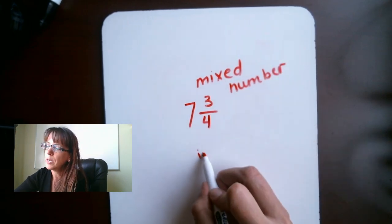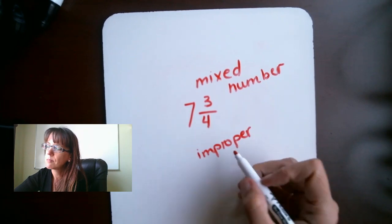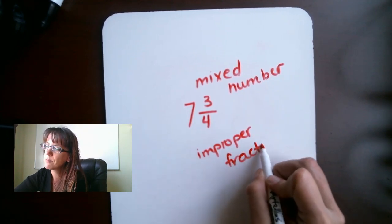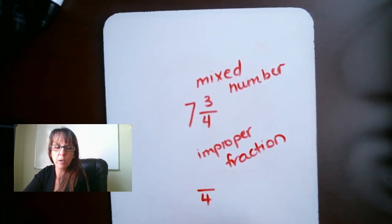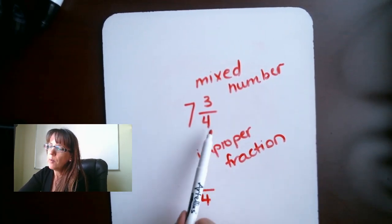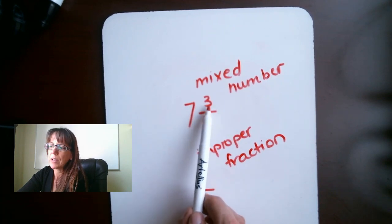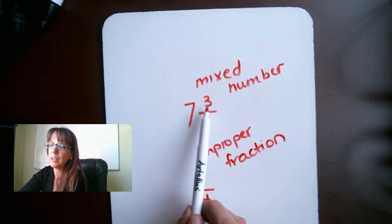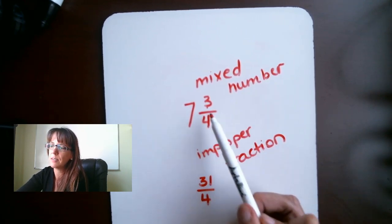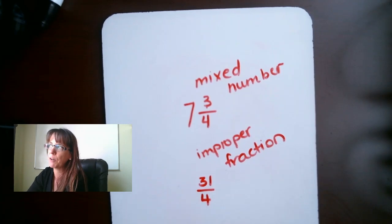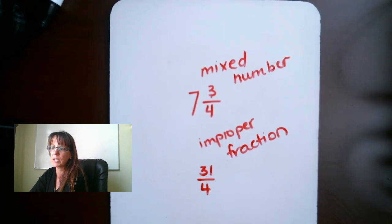In order to turn this into an improper fraction, what we need to do is, we know that the denominator is going to stay the same, so we can just write that down. Now what we have to do is 4 times 7, which gives us 28. Then we add 3, so 28, 29, 30, 31. This is 7 and 3 fourths as an improper fraction.